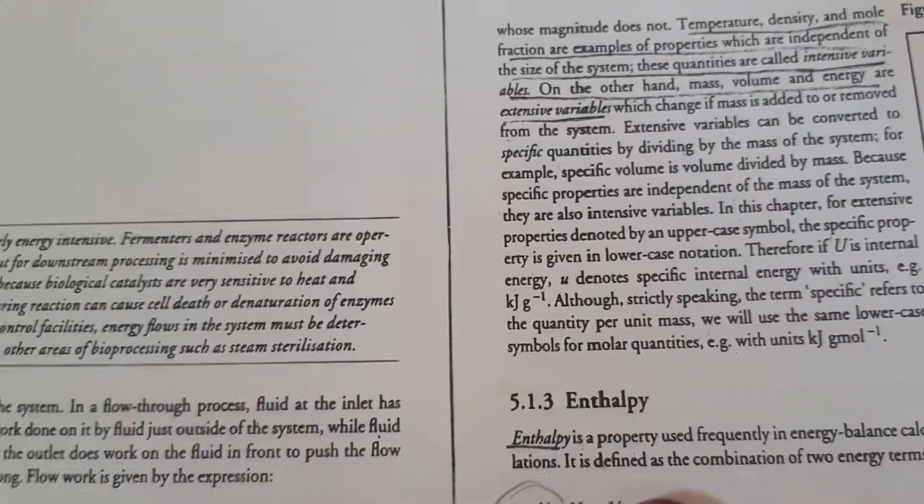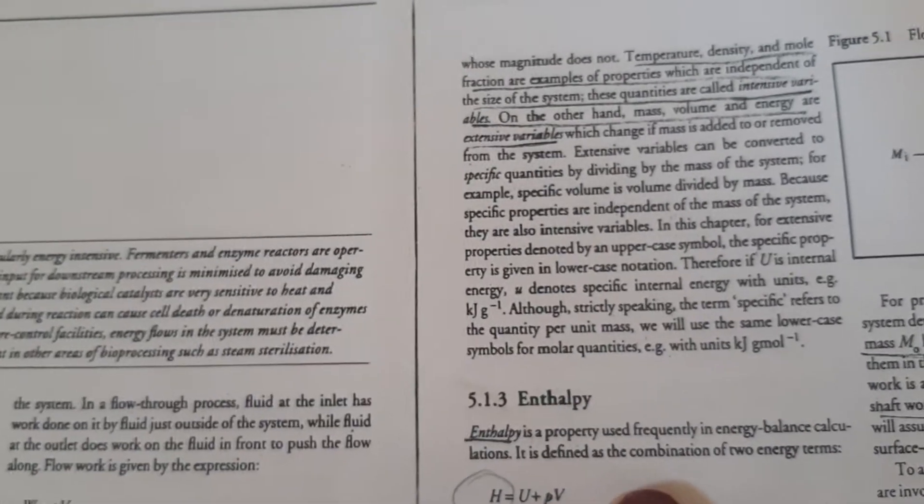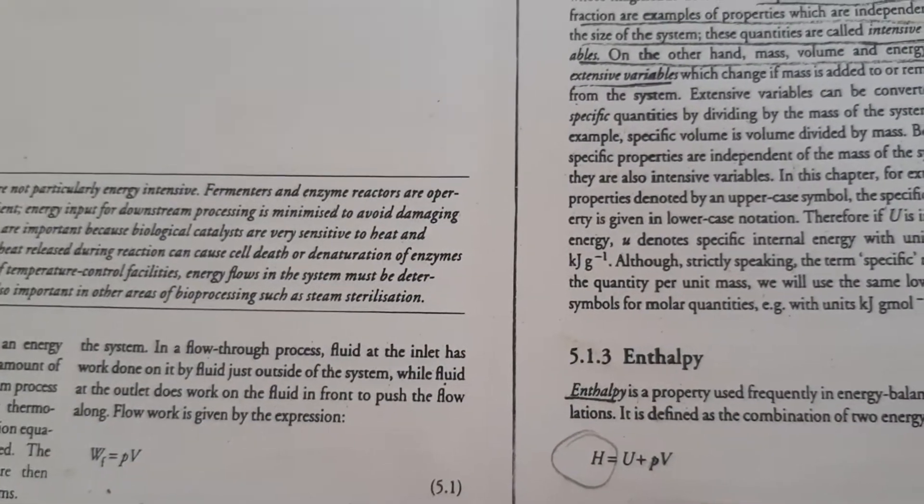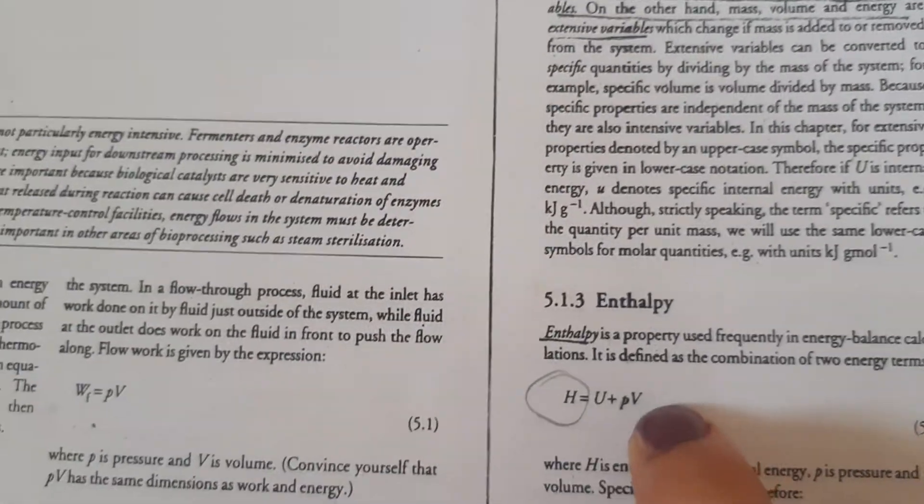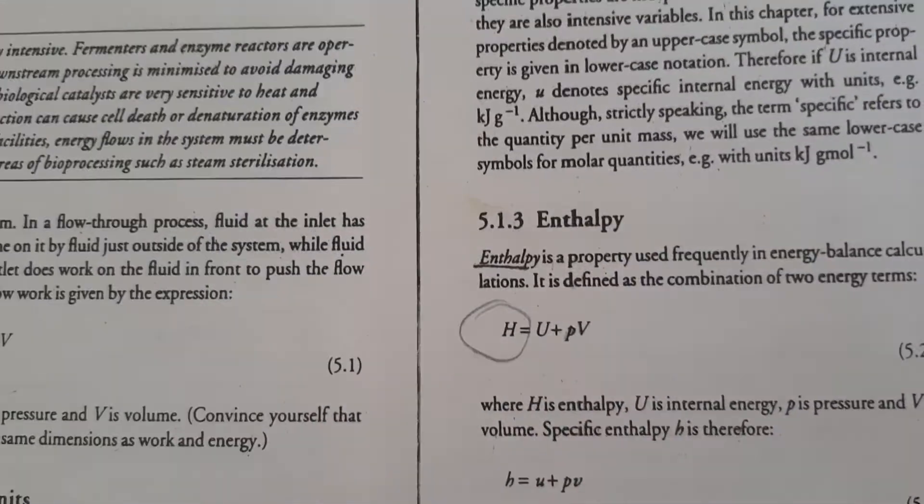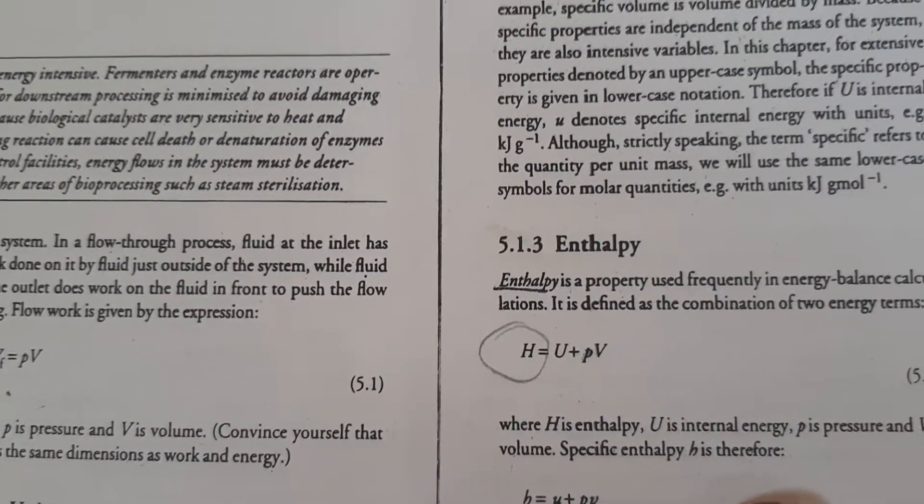Then on the enthalpy. Enthalpy is a property used frequently in energy balance equations. It is defined as a combination of two energy terms: H equals U plus PV. Here H is the enthalpy, U is the internal energy, P is the pressure and V is the total volume.